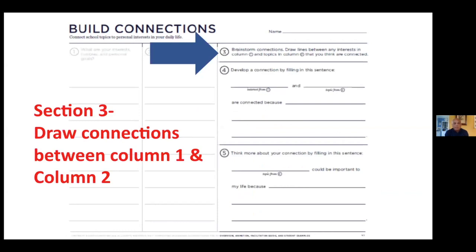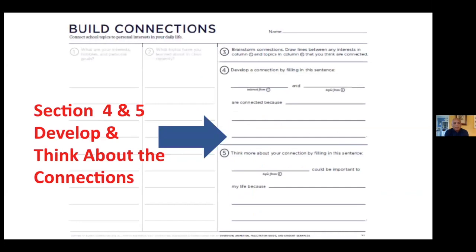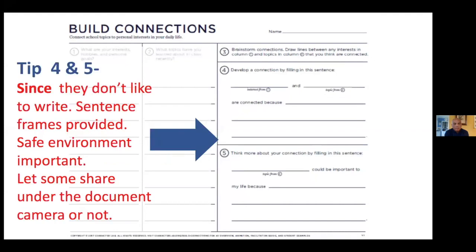In column three, students are asked to literally draw lines connecting things from column one — their interests — to column two — what they're studying. Sometimes students will struggle with this, so sections four and five ask them to develop and think about those connections. Sentence frames are provided so students don't face a blank page, giving them structure for making and articulating their connections.